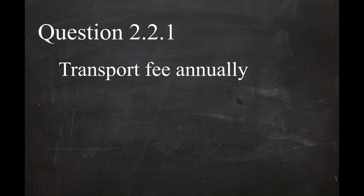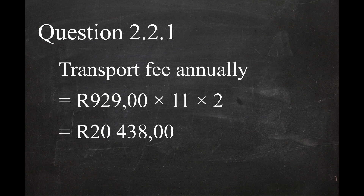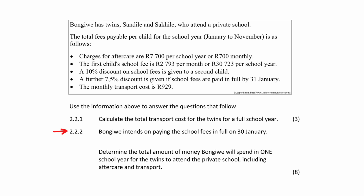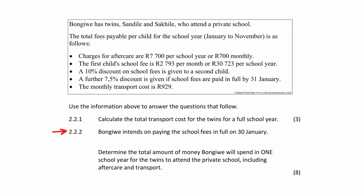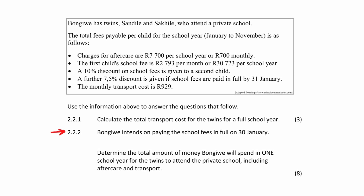So the total transport cost is 929 Rand multiplied by 11 months multiplied by 2 children, and this equals 20,438 Rand.